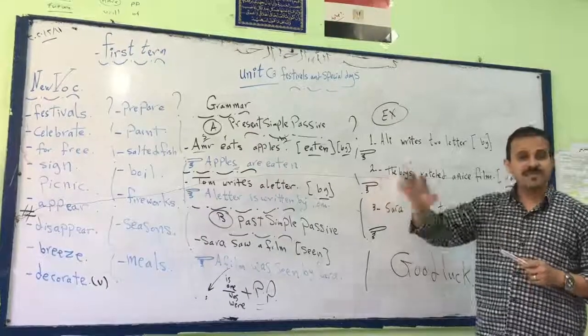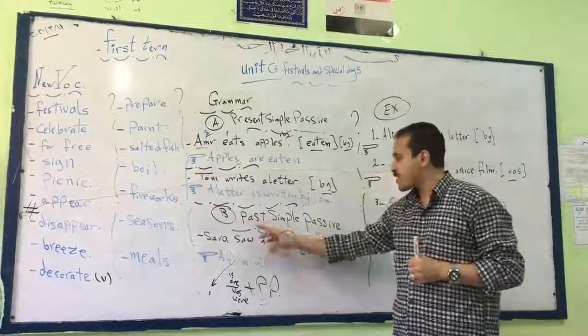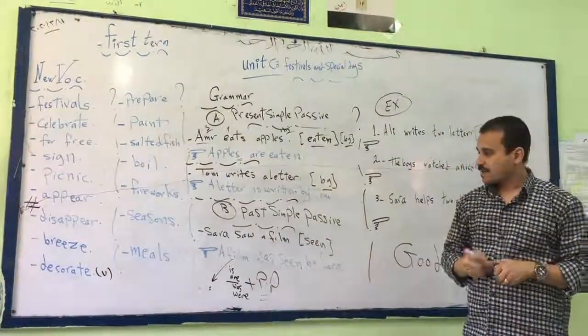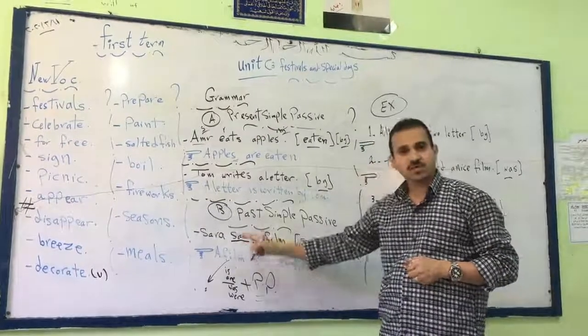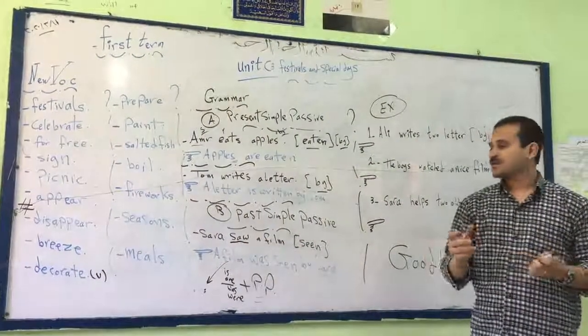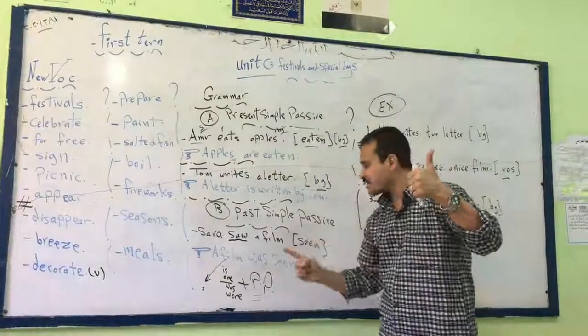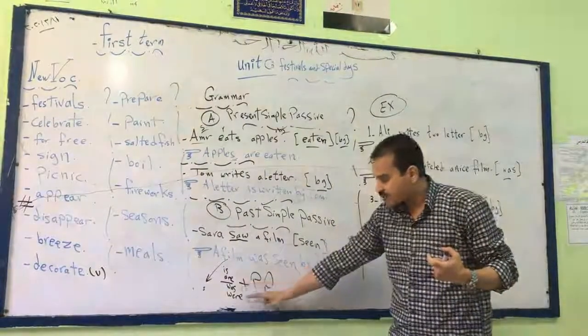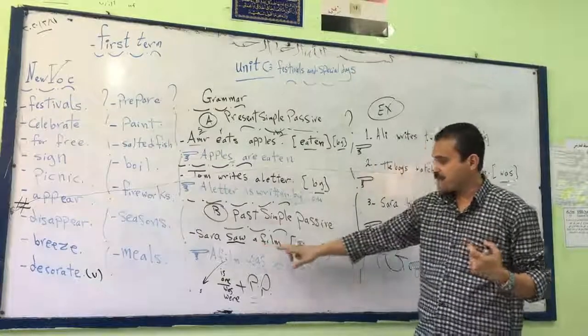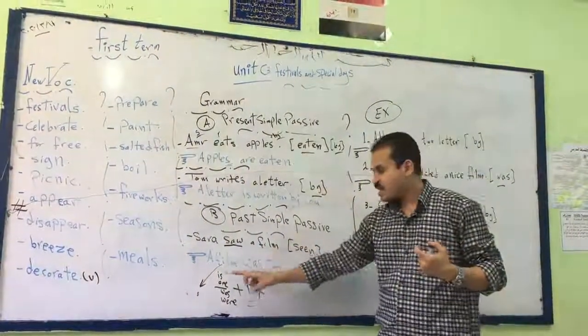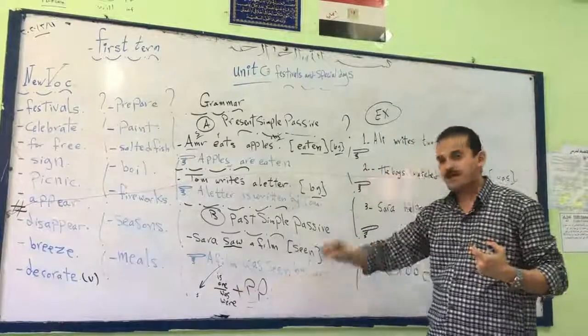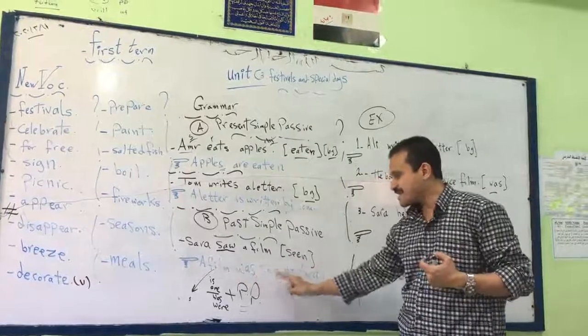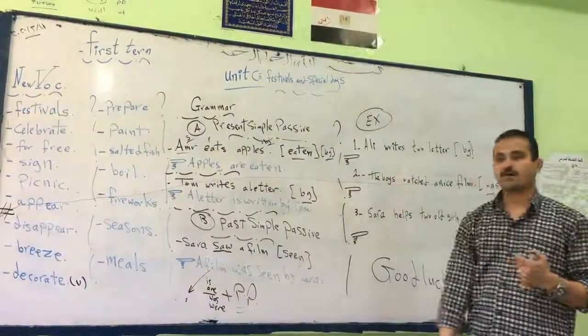Now the same thing, the same steps in the past. Sarah saw a film. Now we are in the past because of saw. First, yes, right, begin with the object: a film. Number two, use was or were. But here, singular, so we use was. A film. Number three, yes, very good. A film was seen, the past participle of the verb, by Sarah.